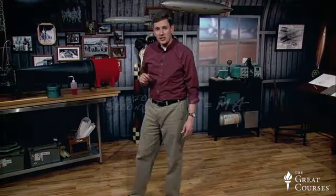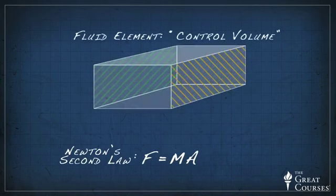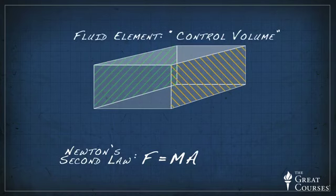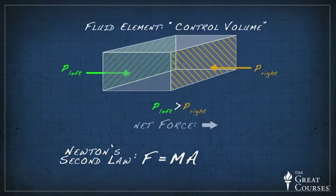Now, the Bernoulli equation is connected to Newton's second law, which states that force is equal to mass times acceleration. We can think of it in this way. A pressure difference acting across a fluid element, a small imaginary chunk of fluid called a control volume, provides a driving force on that control volume. If the pressure on the back side of the fluid element is higher than the pressure on the front, there is a positive force that pushes the fluid element forward.